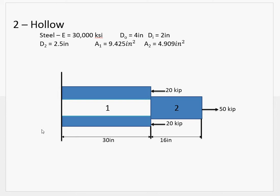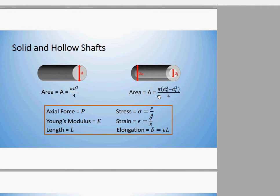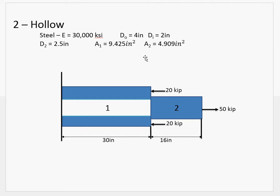And if you go back to the earlier video where I went through the basic concepts, you can see here, for hollow shafts, we solve for that area. And it basically just comes down to the outer diameter minus the inner diameter within the area, the standard area equation. And if you do that, you solve for the area of segment 1 to be 9.425 square inches, and the area of segment 2 to be 4.909 inches squared.